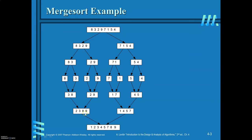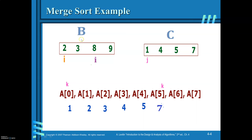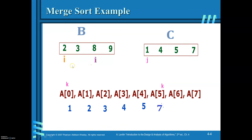The merge algorithm is demonstrated for B with elements 2, 3, 8, 9 and C with elements 1, 4, 5, 7. Set I, J, and K all to 0. Compare the first elements: 1 from C is smaller, so 1 is copied onto A and J is incremented — J now points to 4. Compare 4 and 2: 2 is smaller, so 2 is copied and I is incremented. Next, compare 3 and 4: 3 is copied.